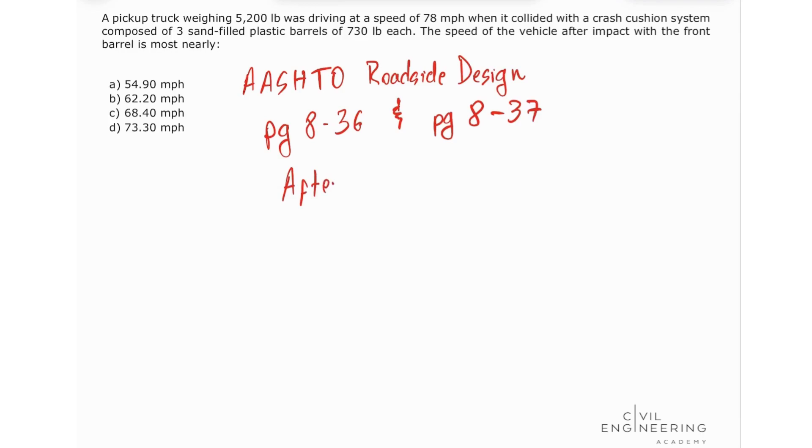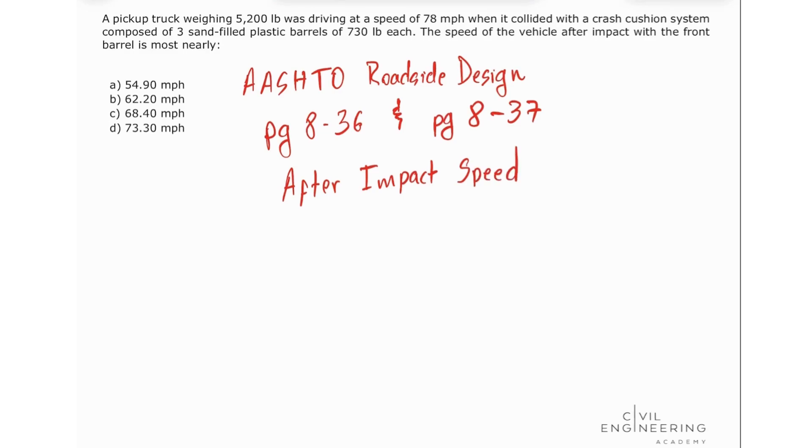Our V1 after impact speed is equal to the mass of vehicle times the original impact velocity divided by the mass of vehicle plus the mass of sand in the first barrel. So this is very important because this is in first barrel.